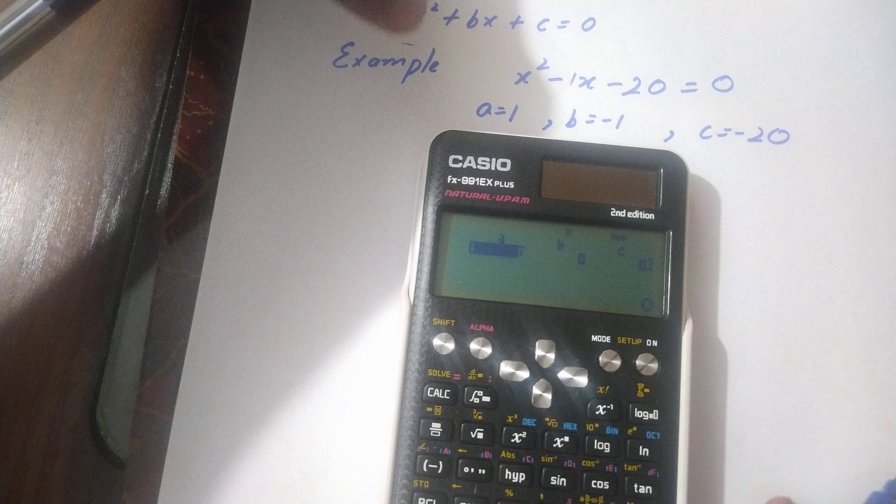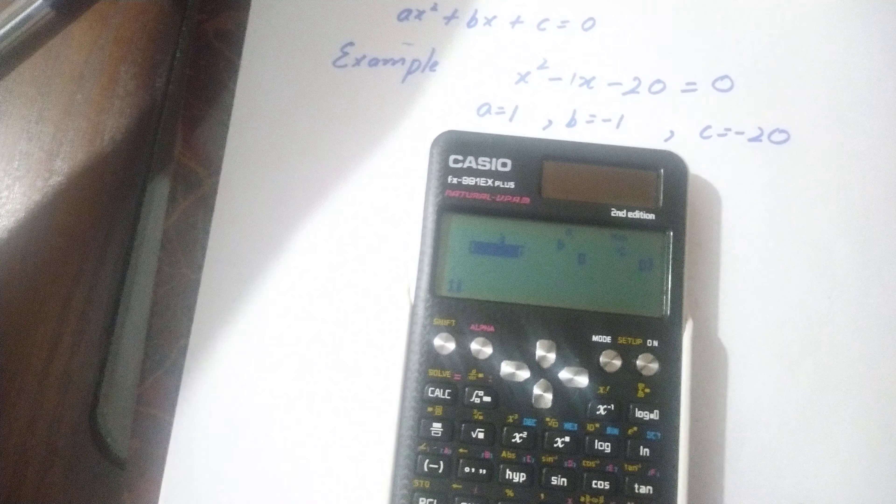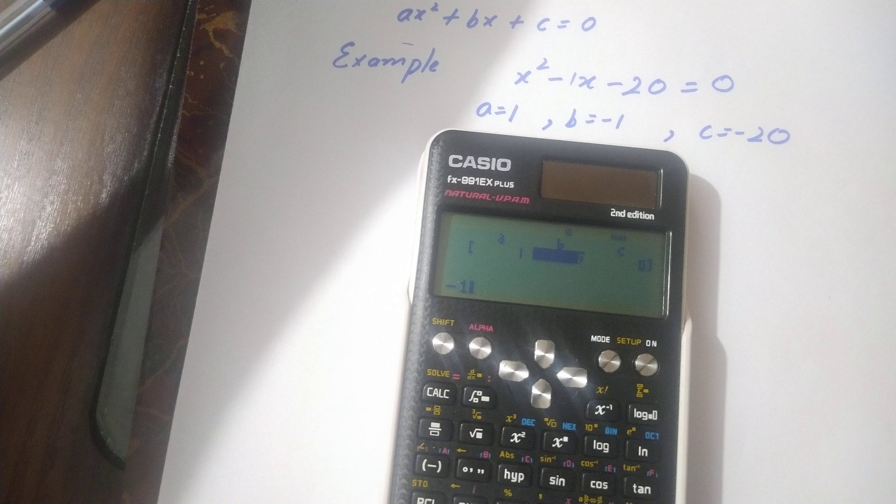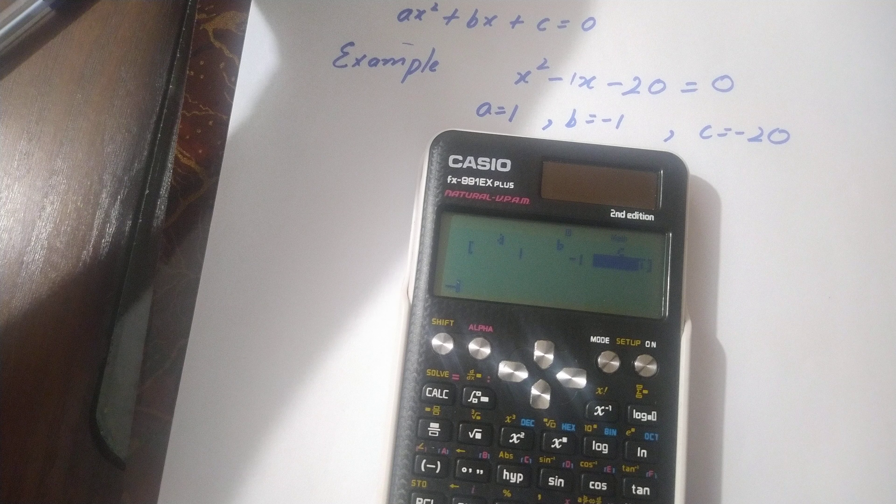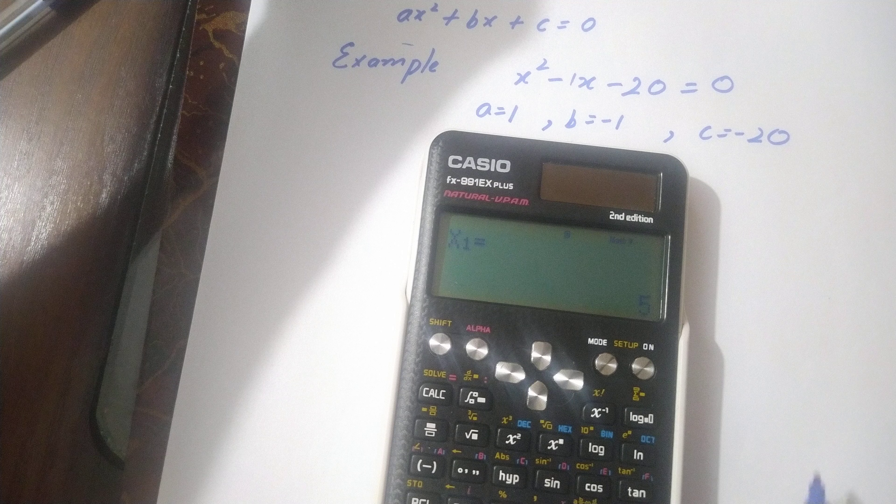Now enter the values. Enter a's value which is 1, then equals. Then b is minus 1, minus 1 then equals. Then c is minus 20, then equals. Press equals again.